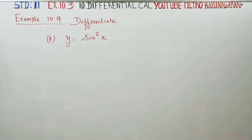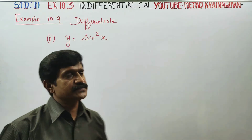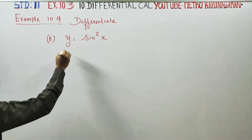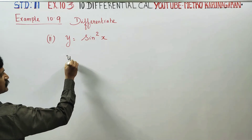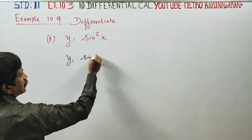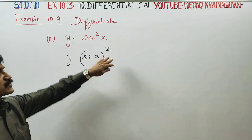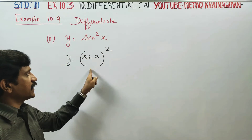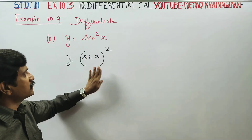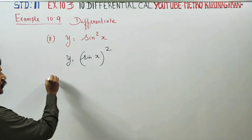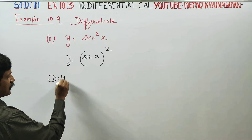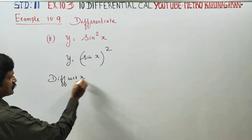Dear 11th standard students, I am Metro Karanagaran. In example 10.9, you have to differentiate y is equal to sin square x. I will differentiate first in the sum of actual style. Sin x whole square in the style of sum of x. Differentiate with respect to x.